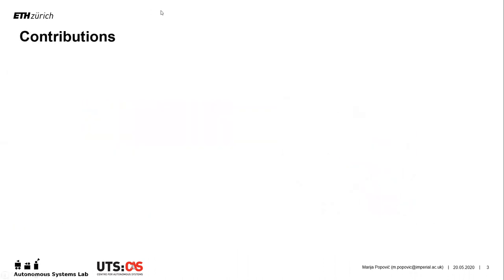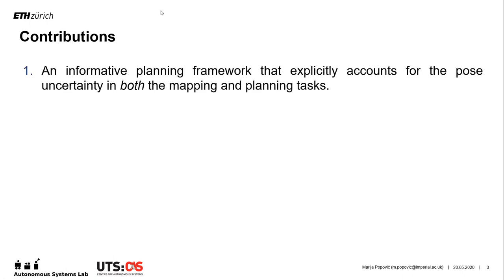To address these issues, we present a new framework for active field mapping under localization uncertainty. Our contributions are in three main fronts. First, unlike previous methods, our framework accounts for the pose uncertainty in two places: mapping and planning. This allows us to create robust and accurate maps.